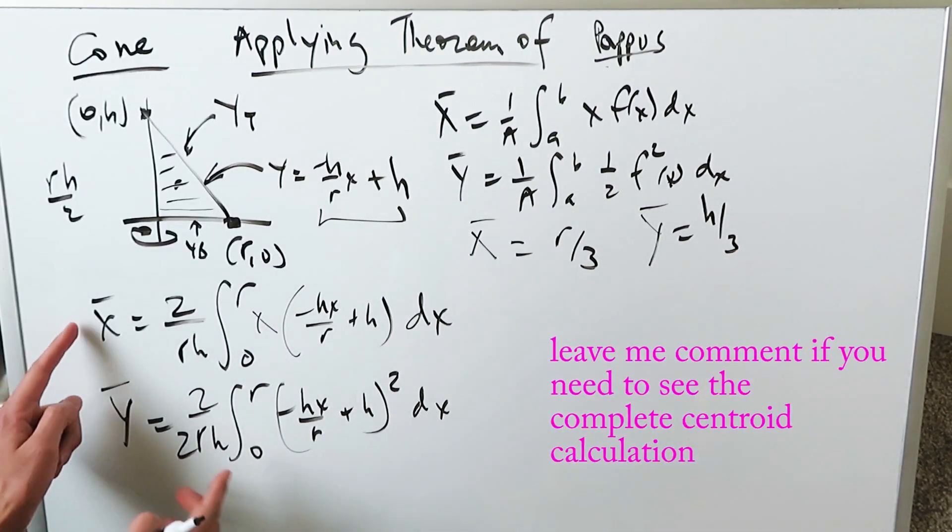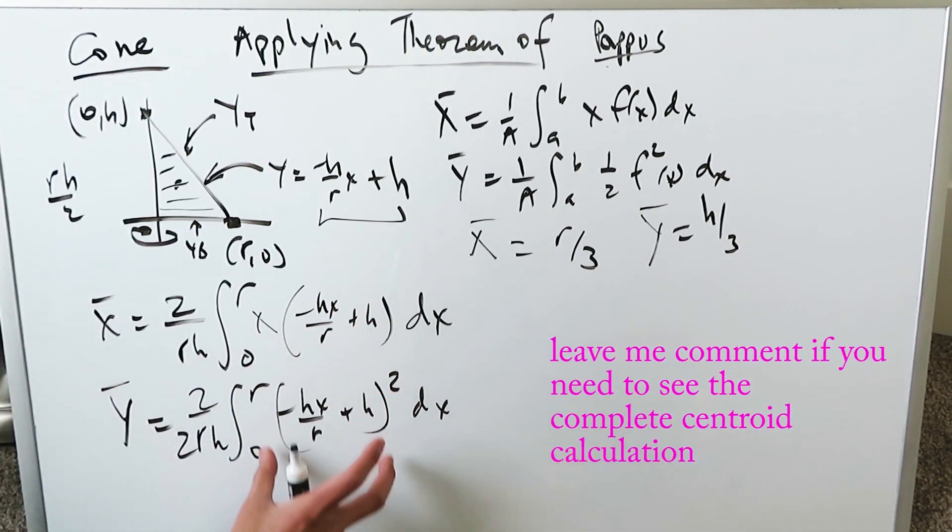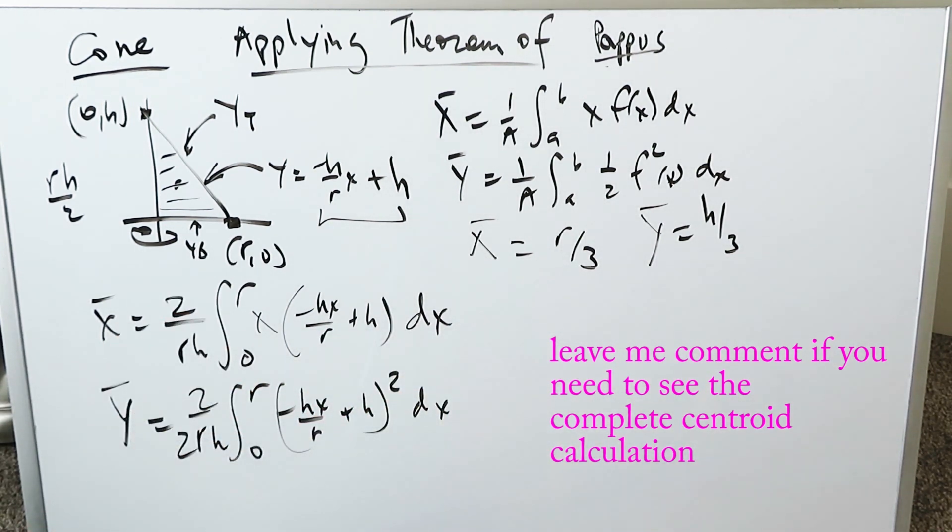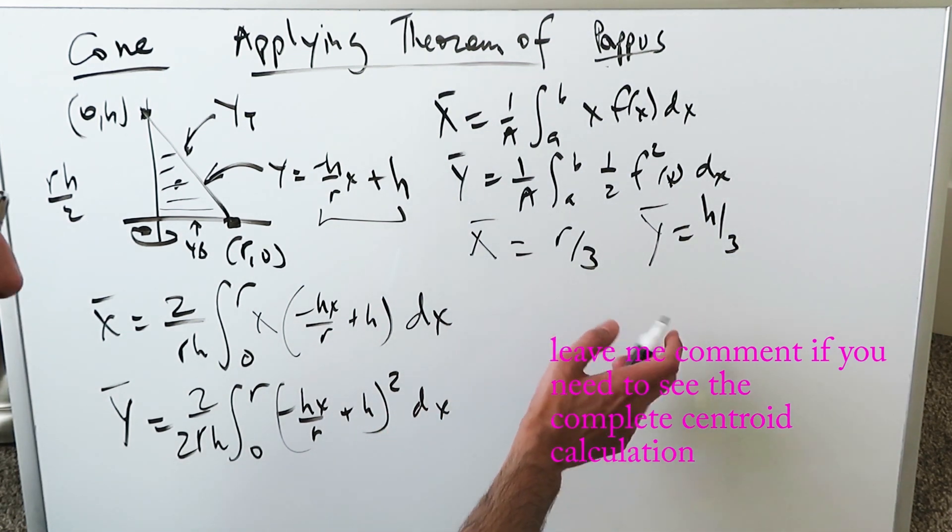So for the purposes of this video, I have skipped out on this definite integration because you all know how to do polynomial integration. There is no u-substitution or any of that coming in. We have our centroid value. Now let's do the volume.